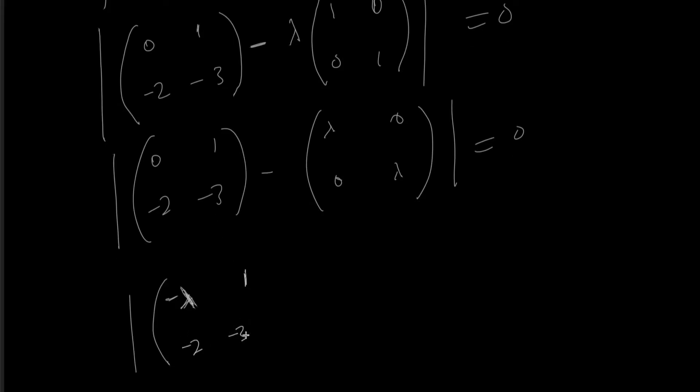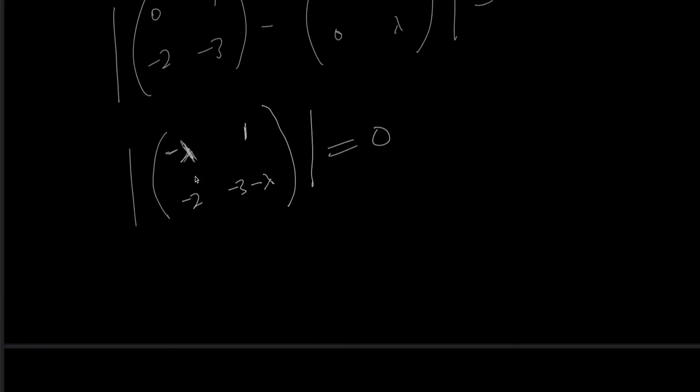The next thing we need to do is find the determinant of these, which is this diagonal multiplied: 6 minus λ times -3 minus λ, minus -2 multiplied by 1, which is minus 2, equals zero.